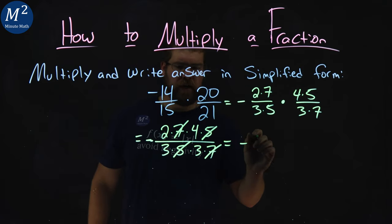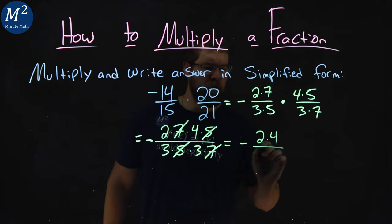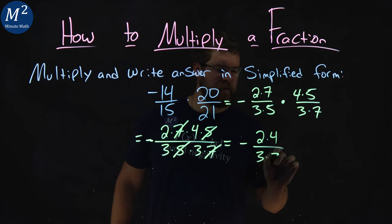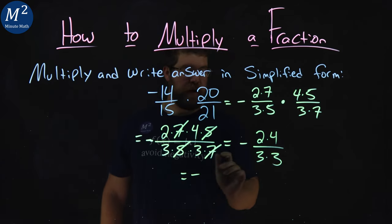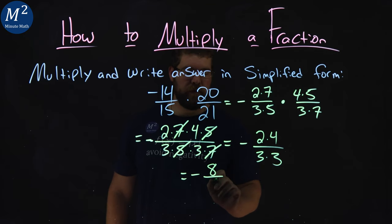So what does that equal? I have a negative. I have 2 times 4 over 3 times 3 is what's left over. Meaning, simplified now, 2 times 4 is 8 over 3 times 3 is 9.